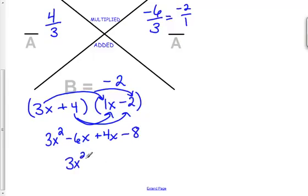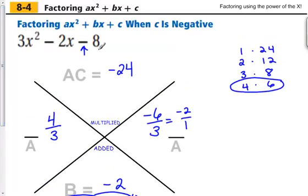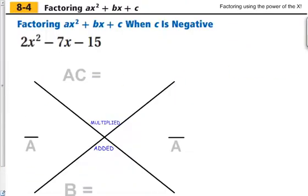And 4 times a negative 2 equals negative 8. So when I combine my like terms, I get 3x squared minus 2x minus 8, which is what we started with. 3x squared minus 2x minus 8. So we can see how using this method also works with our negative c value.